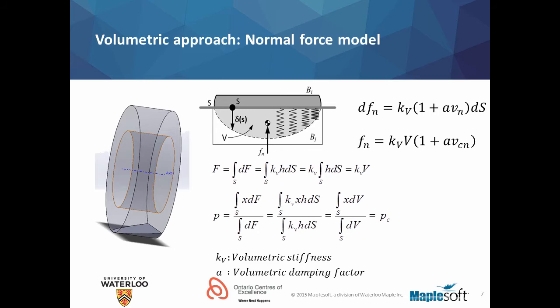kV is known as the volumetric stiffness coefficient. The introduction of damping can also be accommodated in this framework. If we consider A to be the volumetric damping factor, the total force Fn can be evaluated as kV times volume times 1 plus A multiplied by vCn, where vCn is the normal component of the velocity of the centroid of the volume. However, it can be easily seen that the point of application of this force Fn is no longer at the centroid of the volume.